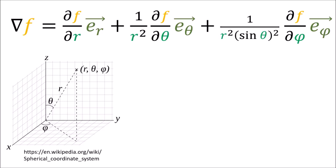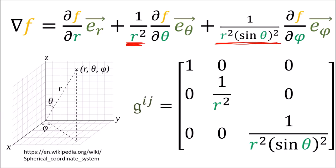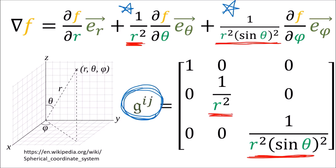If you've ever seen the formula for the gradient in spherical coordinates, you probably know it looks a bit complex with all those extra terms — and all those extra terms actually just come from the inverse metric tensor components. So the inverse metric tensor really does help us get the gradient formula right in every coordinate system. In your multivariable calculus classes you might have derived all these terms manually by doing substitutions and coordinate changes, but in tensor calculus we think of these extra terms as just the components of the inverse metric tensor.